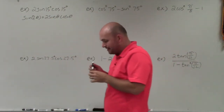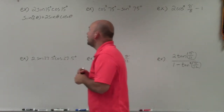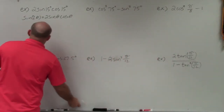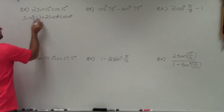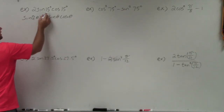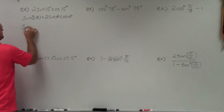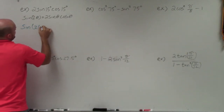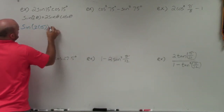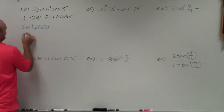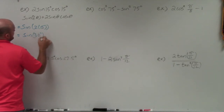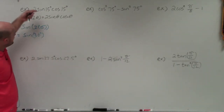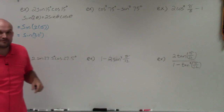To evaluate for the exact value, I'm simply going to replace theta with 15 degrees. So it's going to be the sine of 2 times 15 degrees, which equals the sine of 30 degrees. Therefore, the exact value of this expression is the sine of 30 degrees.